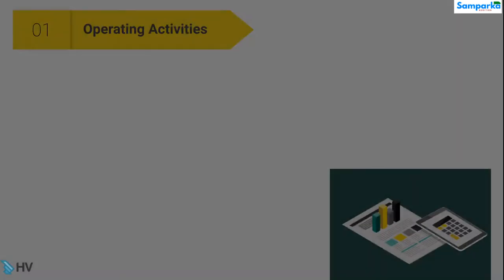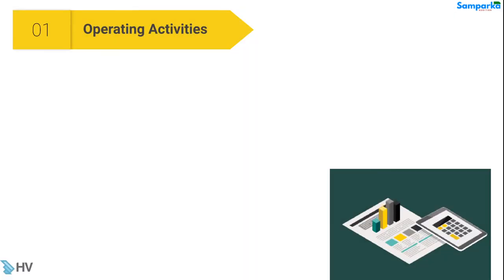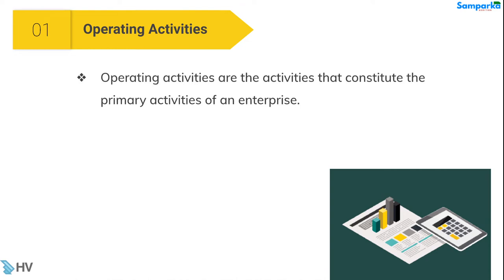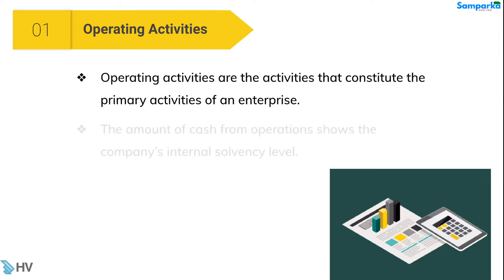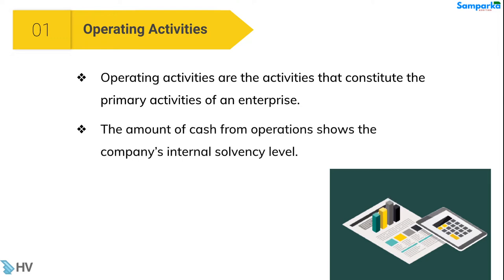Operating activities are the activities that constitute the primary activities of an enterprise. The amount of cash from operations shows the company's internal solvency level.